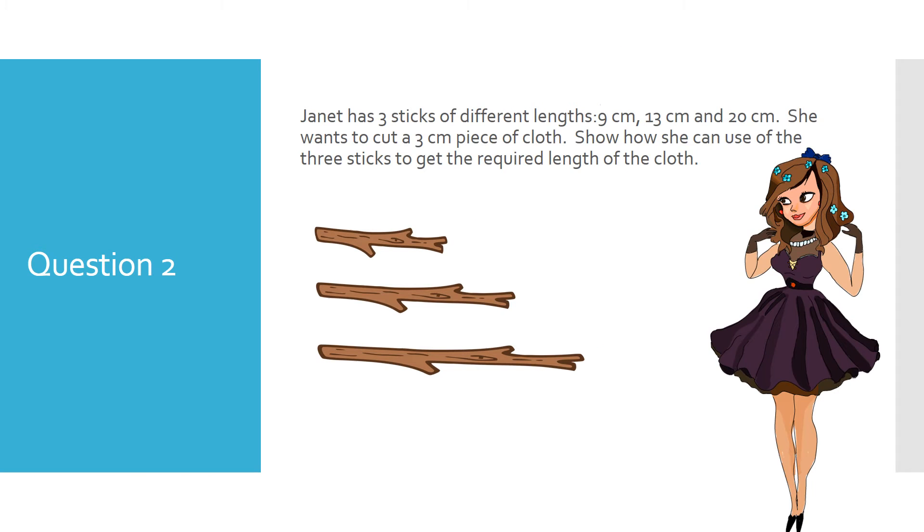Janet has three sticks of different lengths, 9 centimeters, 13 centimeters, and 20 centimeters. She wants to cut a 3 centimeters piece of cloth. Show how she can use the three sticks to get the required length of the cloth.